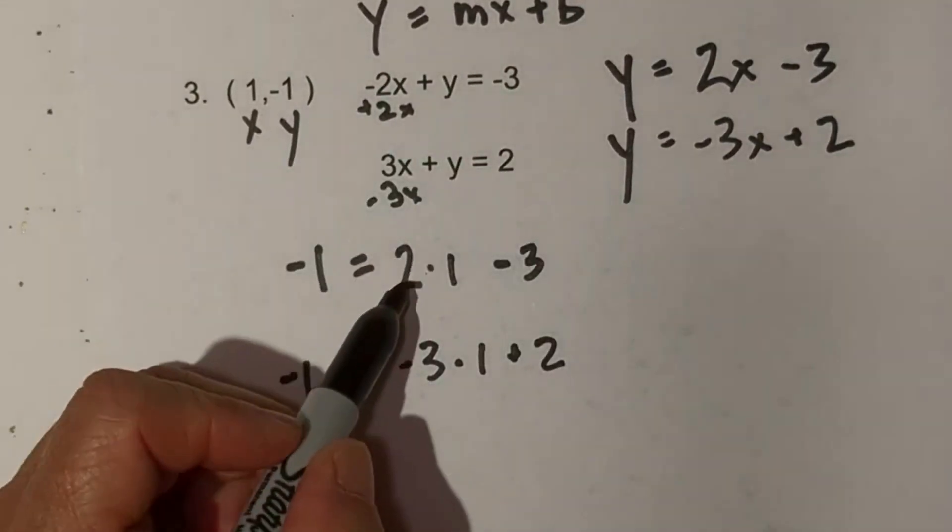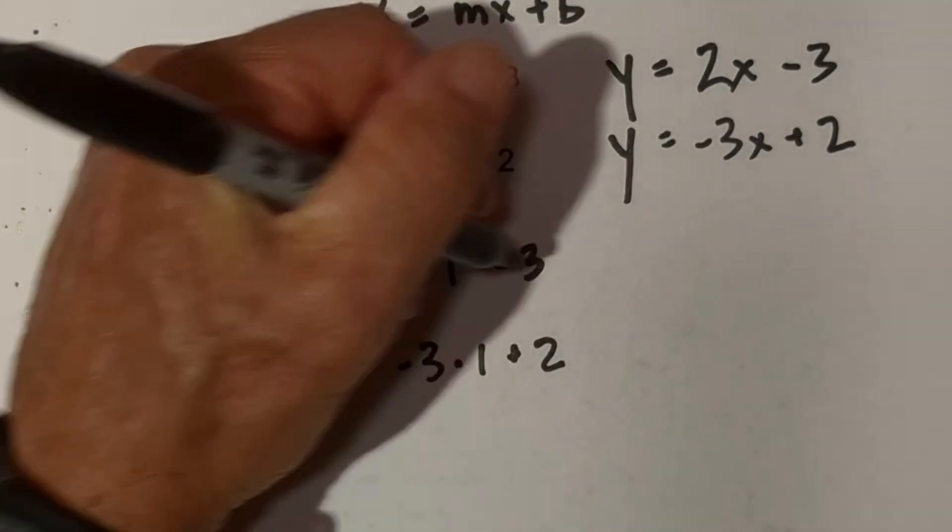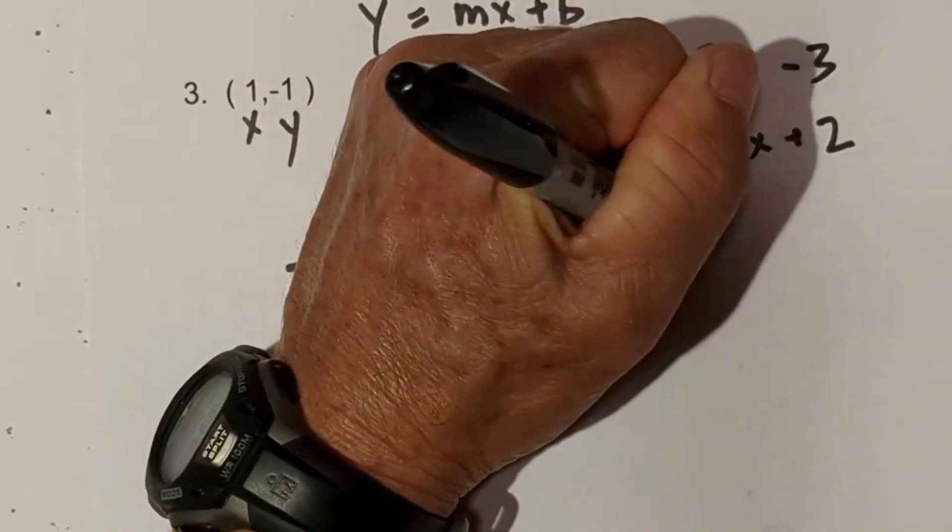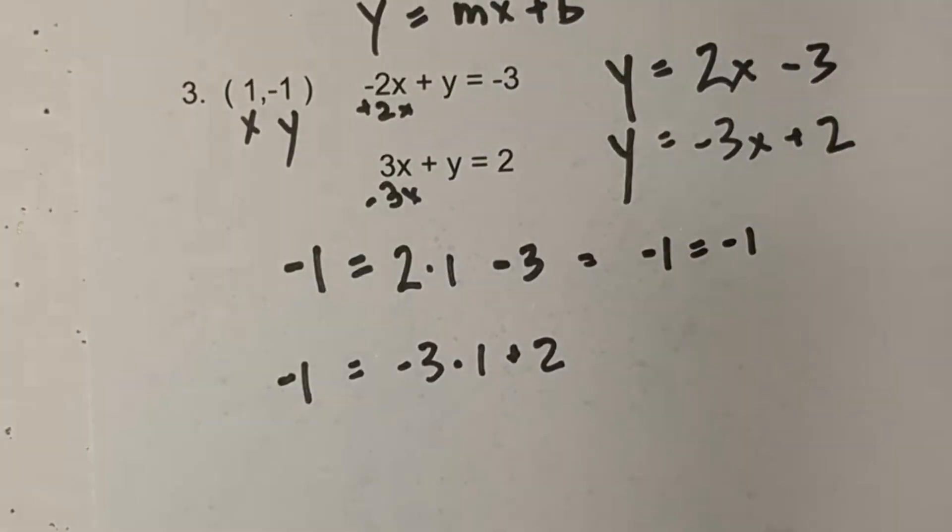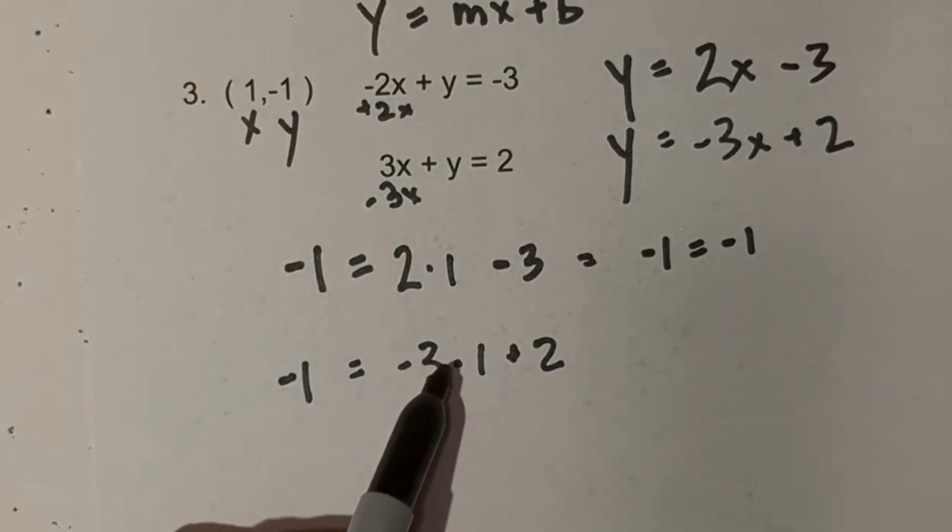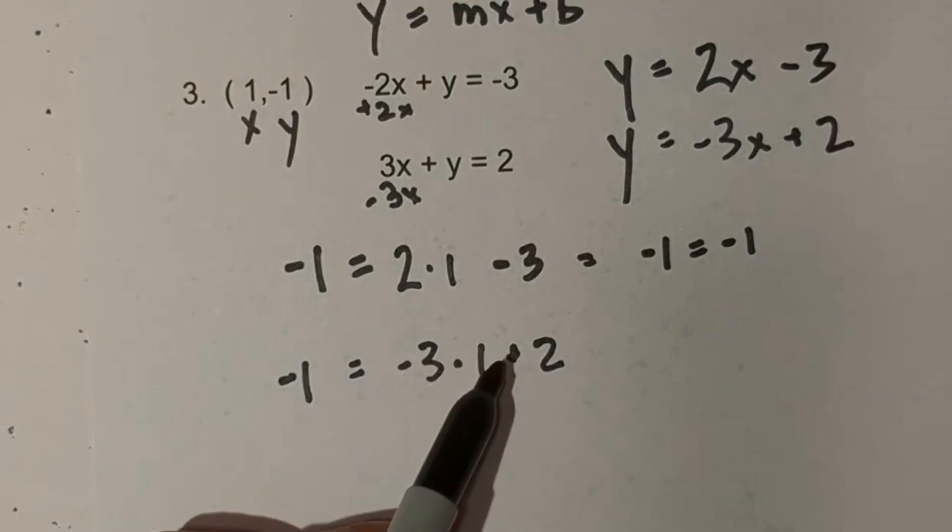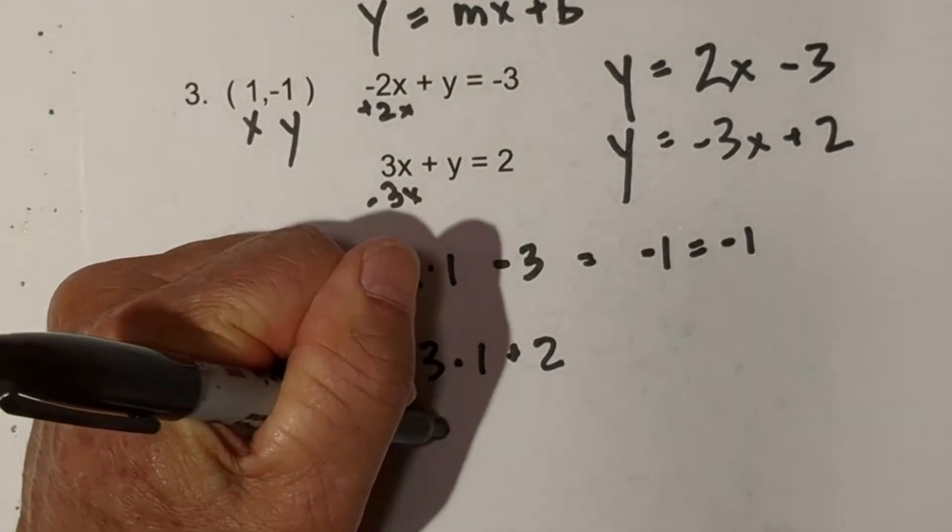Now let's just solve. 2 times 1 is 2 minus 3 is equal to -1 equals -1. And then -3 times 1 is -3 plus a positive 2 is also -1.